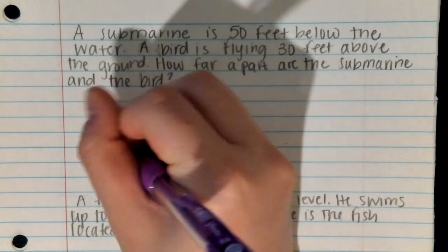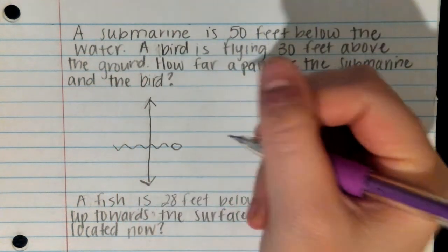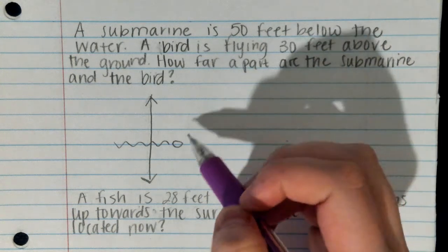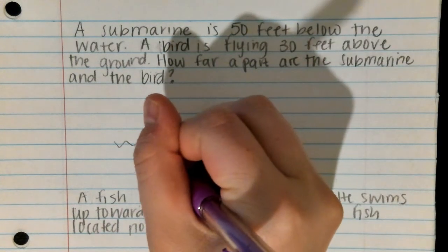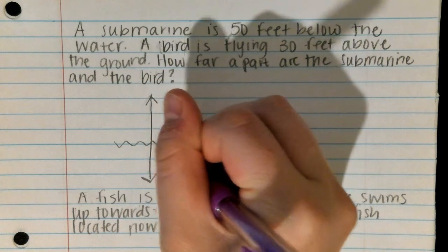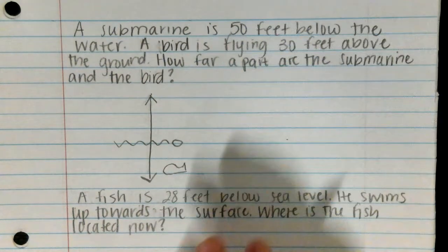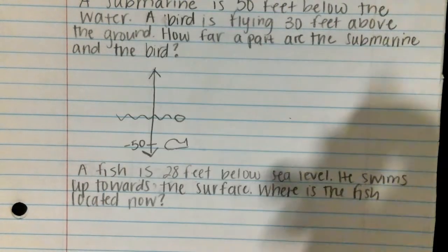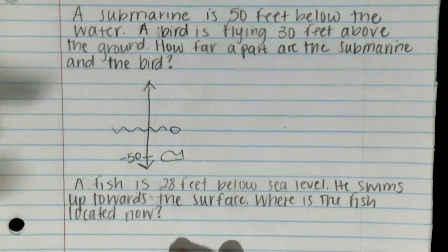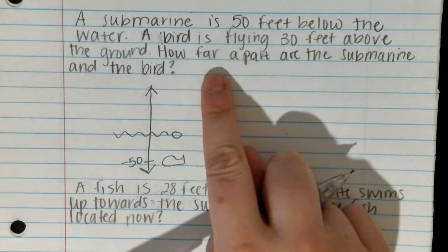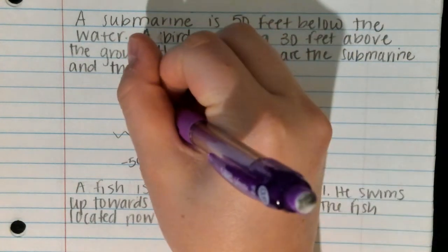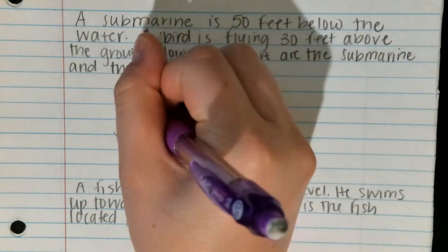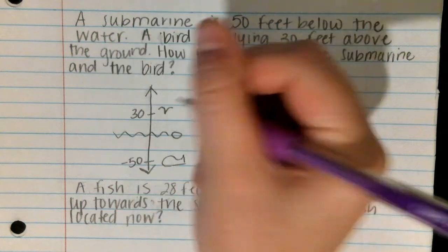The surface of the water is going to be zero. The submarine is 50 feet below the water, so I'll sketch out a submarine — it looks kind of like a fish, that's okay — and it is at negative 50 because it's below the water, so that's negative.